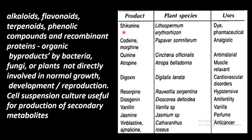Examples of secondary metabolites include: siconine, codeine, morphine, quinine, atropine, digoxin, reserpine, diogenine, vanilline, jasmine, and aerola products.